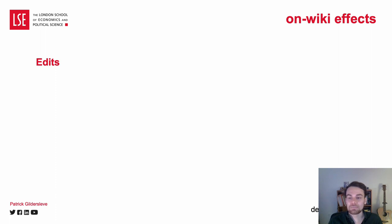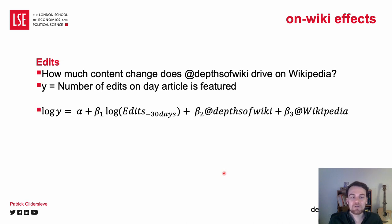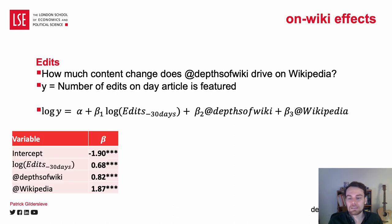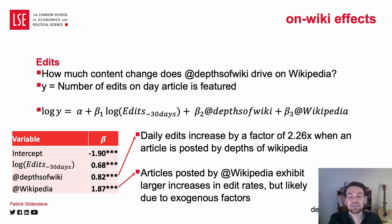Next, with edits — specifically the number of edits on the day an article is featured. Explanatory variables here are the number of edits in the previous 30 days, and then whether the article is posted by Depths of Wikipedia or the Wikipedia official account. Daily edits increase by a factor of 2.26 times when an article is posted by Depths of Wikipedia compared to other accounts. The measured effect here is not as strong as for pageviews, but it's slightly harder here to model the sparse data and account for exogenous factors.